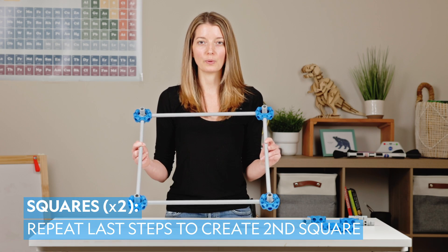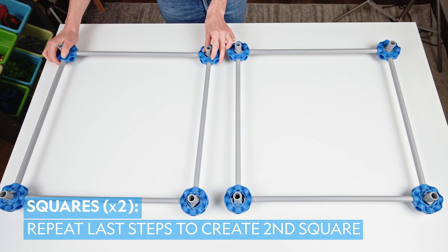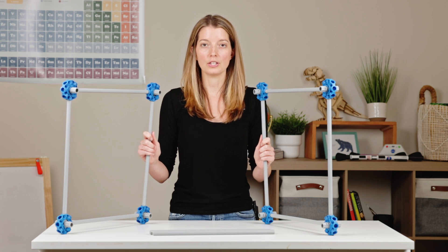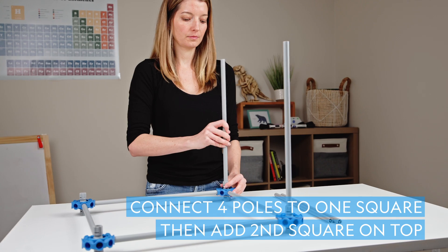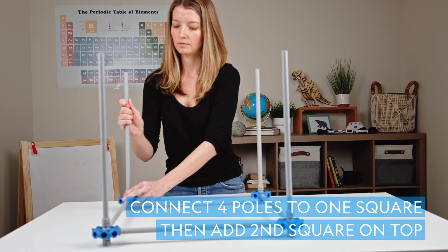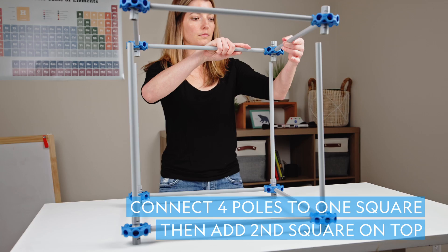Now that we have one square, we'll repeat those steps to make another. And now that you have two squares, you'll connect them to make a cube. Connect four poles to one of your squares, and then add the second square on top.